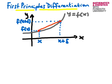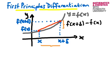The slope of that straight line is given by the change in the y value divided by the change in the x value. The change in the y value is our function evaluated at x plus delta minus our function evaluated at x. The change in the x value is x plus delta minus x, which is simply delta.